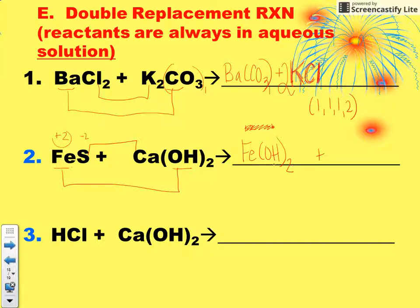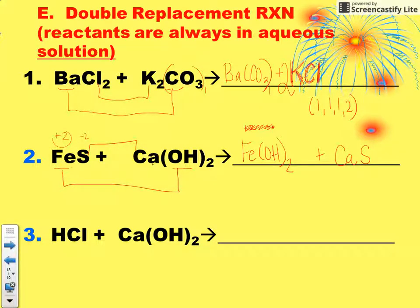Remember to erase any charges in your final formula, giving Fe(OH)₂. Now calcium and sulfur come together — Ca and S, metal goes first. Calcium is a positive two and sulfur is a negative two, so charges cancel. That is the formula for calcium sulfide, CaS. Go back and balance: one iron each side, two hydroxides each side, one calcium each side, one sulfur each side. This equation is balanced as written.